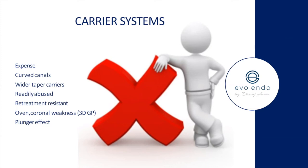Why does the taper of carriers matter? We discussed on the last webinar the importance of preserving as much pericervical dentine as possible — we don't want those large tapers historically used. Thermafil can be readily abused because it's quick and efficient, and when anything is advertised as quick and efficient, dentists try to make it even more efficient by cutting more shortcuts. Another downside: it's heated in an oven which may cause weakness in the GP, and with a plunger effect you can't know whether the GP has slid off on one side.